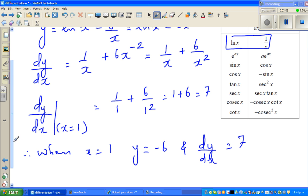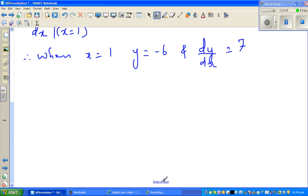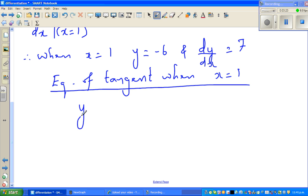So now if we know the gradient, we can write the equation of the tangent. Equation of the tangent when x equals 1 is, I'm using the formula y equals mx plus c. So y equals m, so this is nothing but your m, so that is 7x plus c. Now we need to find the c, which is the y-intercept.